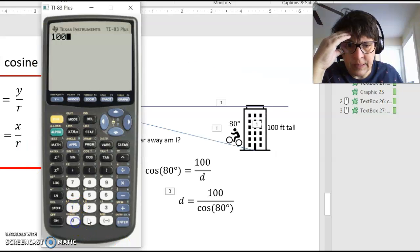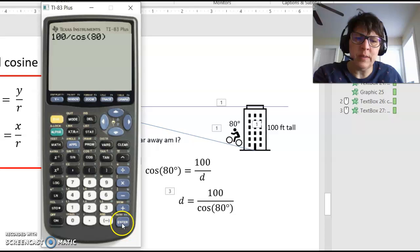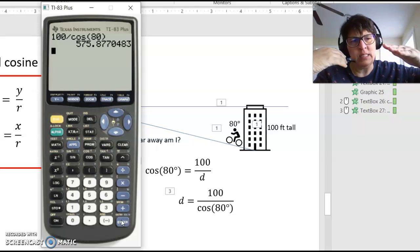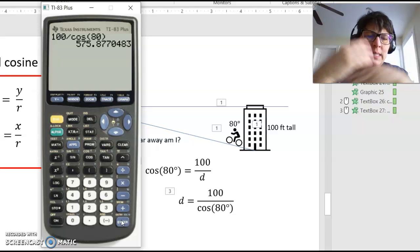So 100 divided by cosine of 80. And I should still be in degree mode. So if our angle isn't as steep, we're going to have to go a much longer distance.